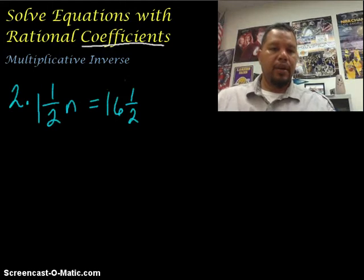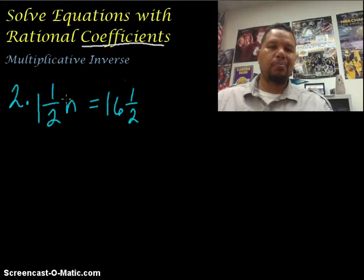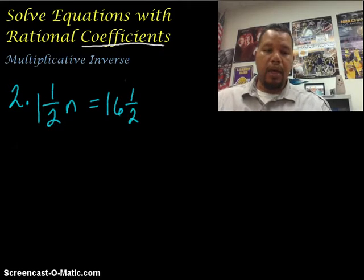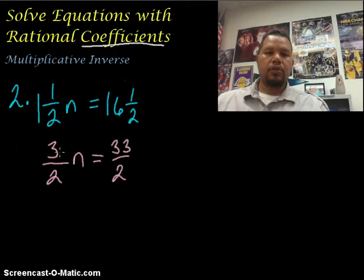Here we have a second equation with rational coefficients. And this time, the rational coefficient, or the number next to the variable, is a mixed number. Actually, we have two mixed numbers. So in order to start solving this, the first thing we're going to do is change these mixed numbers into improper fractions by multiplying the denominator times the whole number and adding the numerator.